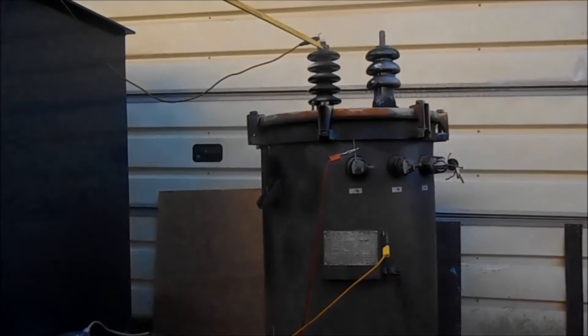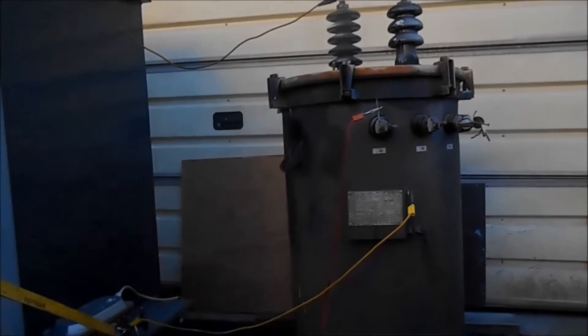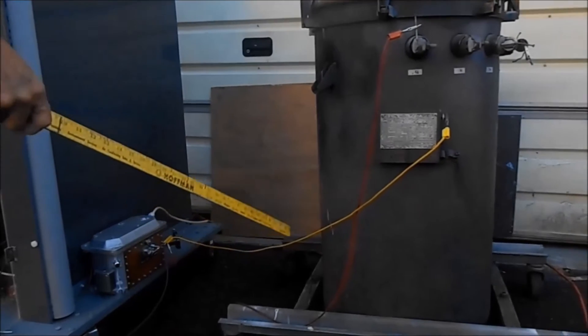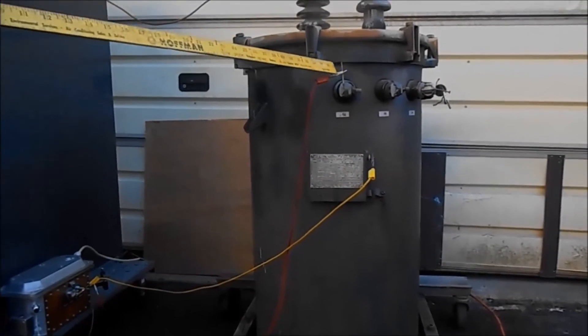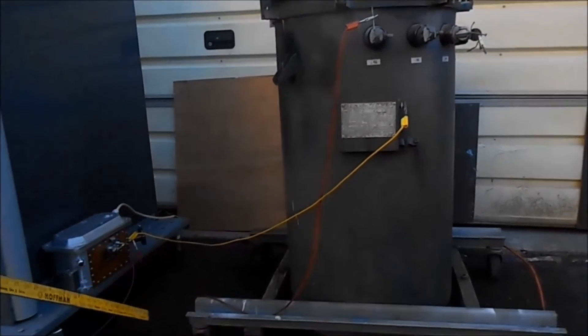We have to hook up the high voltage to the bushing. The return connects to the shunt and the ground wire connects it to the impulse generator base.